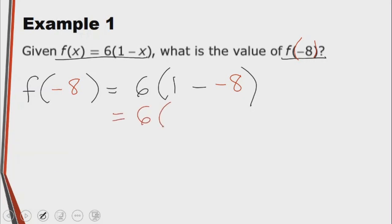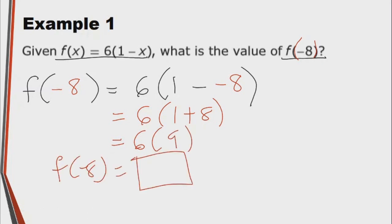The output is going to be 6 times 1 minus negative 8. Minus multiplied by a negative is going to become a positive. So we are going to have 1 plus 8. So we have 6 multiplied by 9. The answer in this case will be 54.